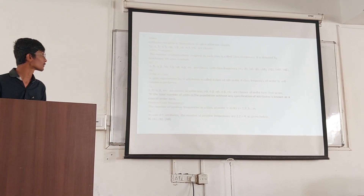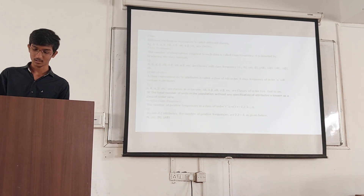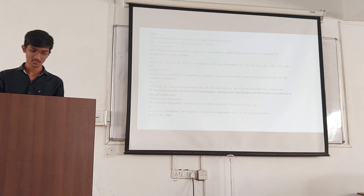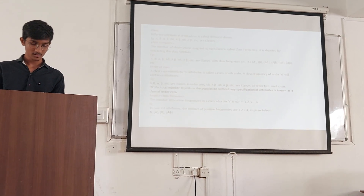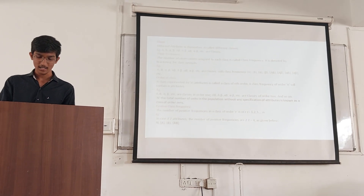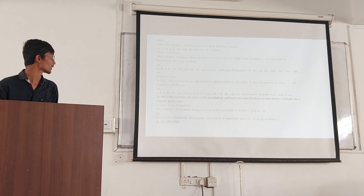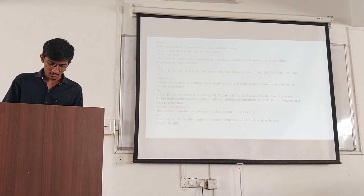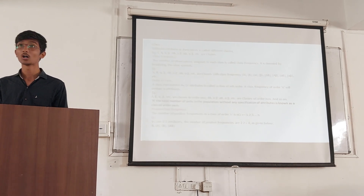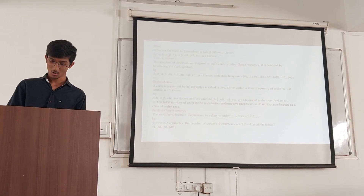Order of class: A class represented by N attributes is called a class of N-th order. Class frequency of order N has certain N attributes. Example: A, B, alpha, B, etc., are classes of order 1. AB, A-beta, alpha-B, alpha-beta, etc., are classes of order 2. The number of units in the population without any classification of attribute is known as class of order 0.